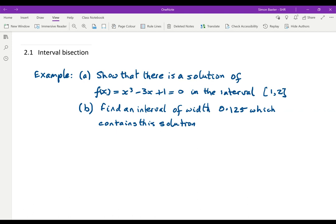Show that there is a solution of f(x) equals x cubed minus 3x plus 1 equals naught in the interval [1,2]. Find an interval of width 0.125 which contains this solution. Okay let's go about that.